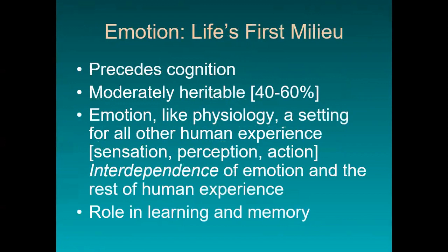Emotion itself is life's first milieu. It precedes cognition and is moderately heritable. About 50% of our emotionality is related directly to our genes. The other 50% would have to do with our environment, our context, and personal choices that we'd make. So emotion, like physiology, is a setting for all other human experience. Our sensations, our perceptions, our actions, our thinking — these all take place in the context of our emotionality.